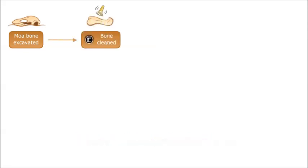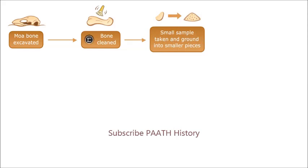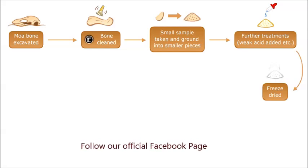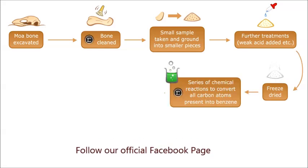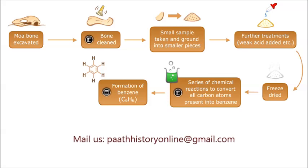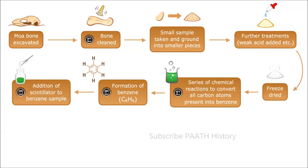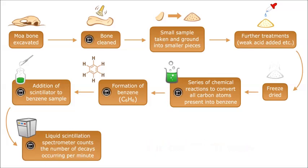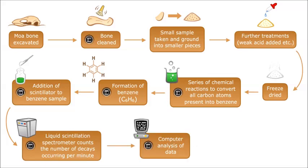First, the sample is cleaned by a brush. Then a small sample is taken and ground into smaller pieces, followed by further treatment by adding weak acid. Then it is freeze-dried. Then a series of chemical reactions are applied to convert all carbon atoms present into benzene (C6H6). The benzene sample then undergoes scintillation — a liquid scintillation spectrometer counts the number of decays occurring per minute. Scientists then use a computer to analyze the data, and finally the date of the sample is determined.